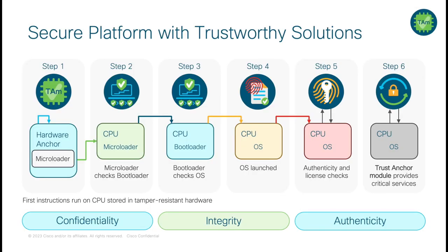As is the case with all Catalyst 8000 series platforms, the C8500 20X6C includes the necessary hardware and software to support trustworthy solutions. Trustworthy solutions uses a built-in trust anchor module, or TAM chip, to assist in authenticating the micro loader, boot loader, and IOS XE software for authenticity. Modifications to the software by a malicious actor during boot time or runtime can be detected. Not only is software verified, but installed licenses can also be authenticated with an assist from the TAM chip.